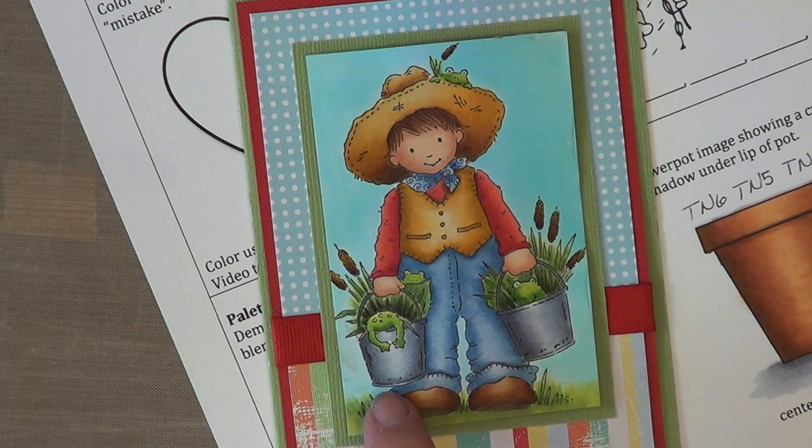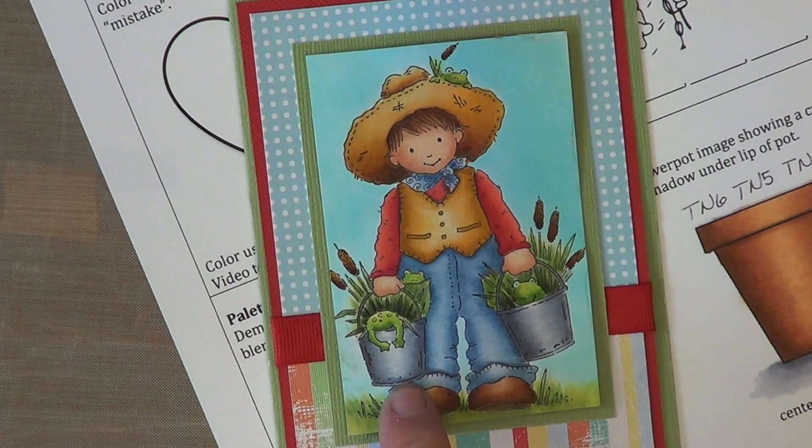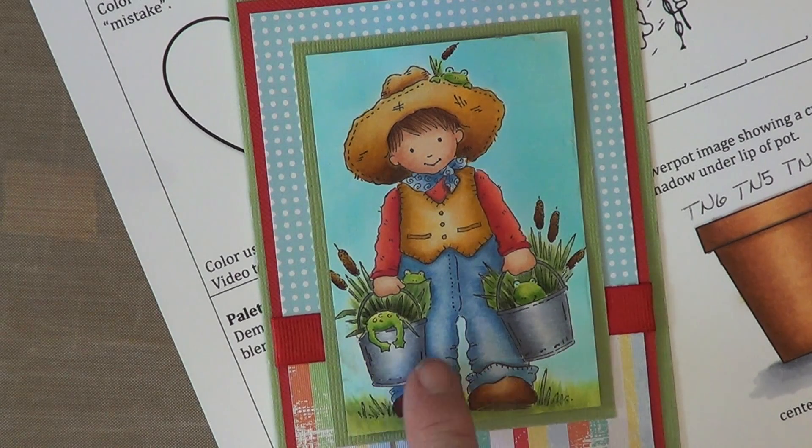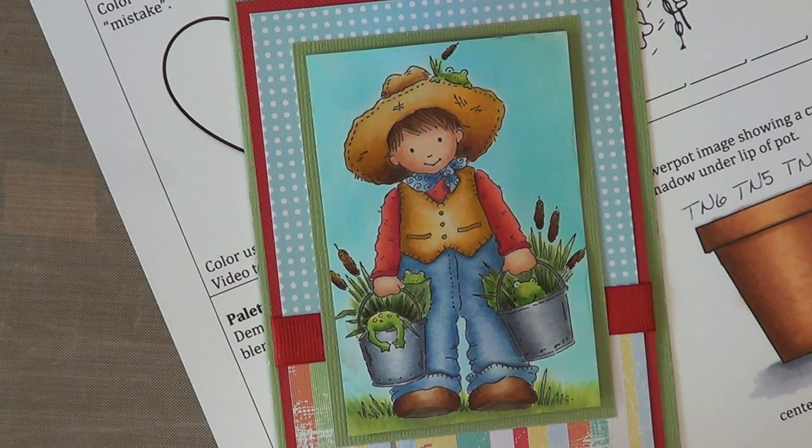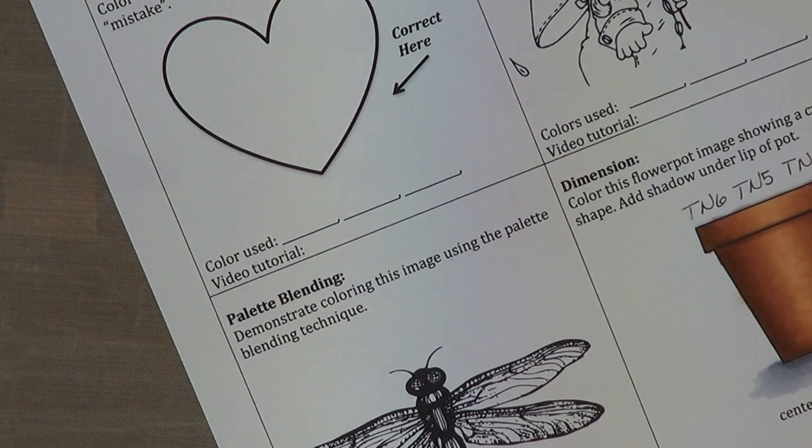Isn't this cute? I love this little image. So my little watering cans have a highlight down the center and it makes my buckets look like cylinder shapes. So let's set him aside and I'll show you one more image.